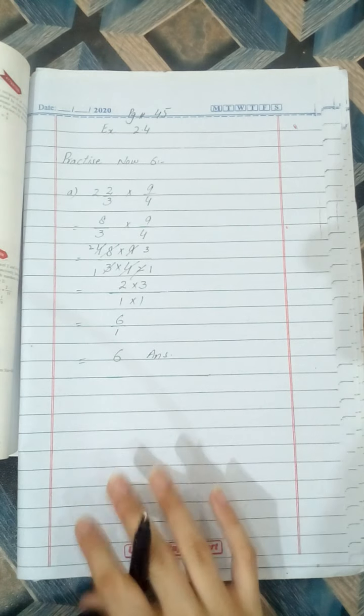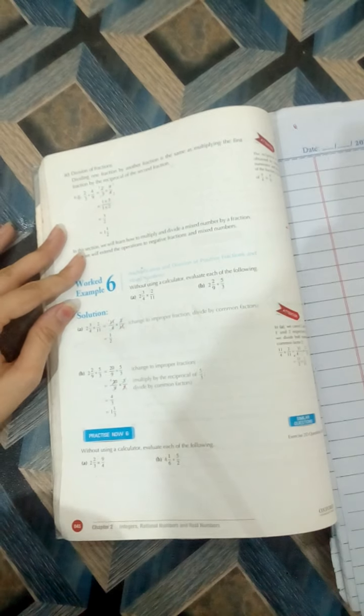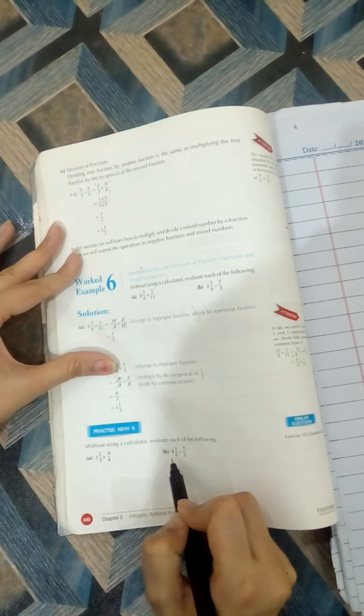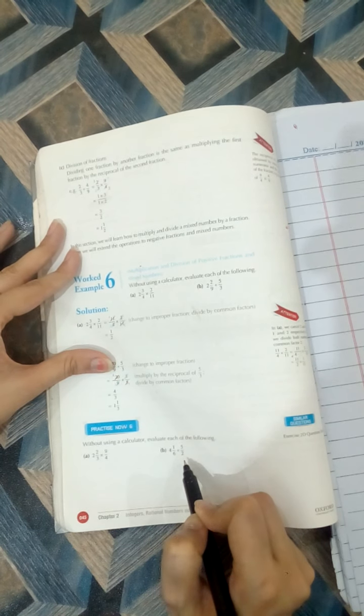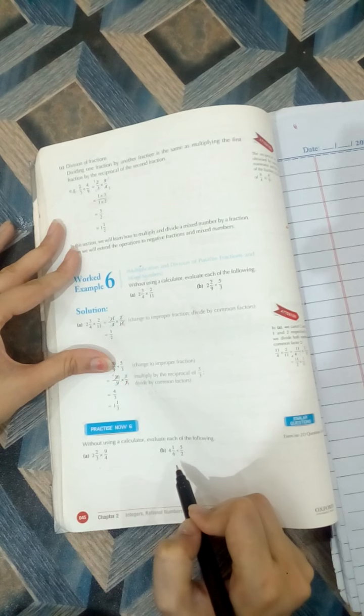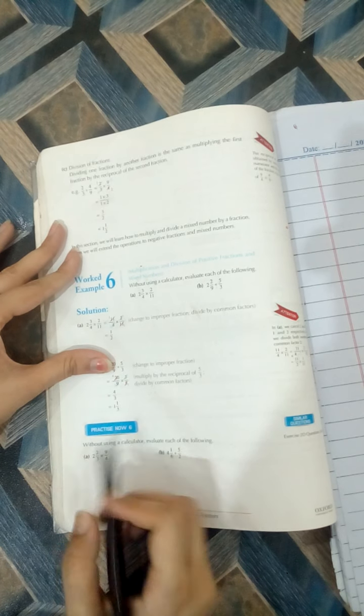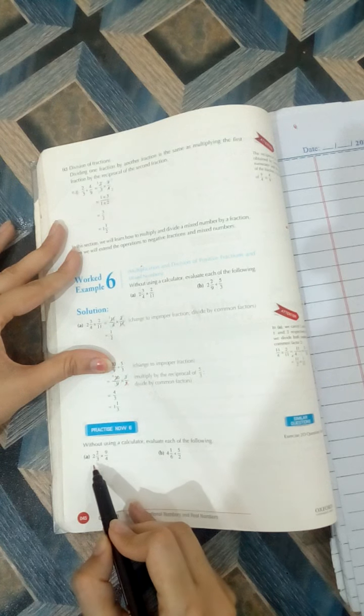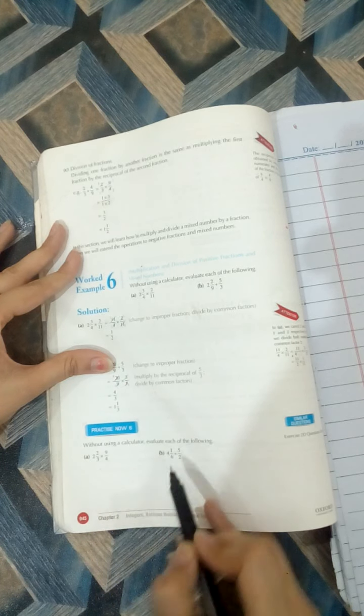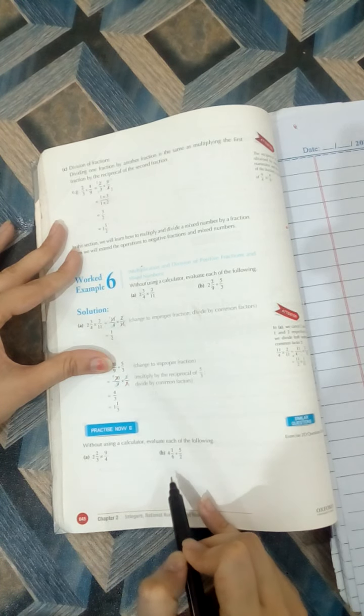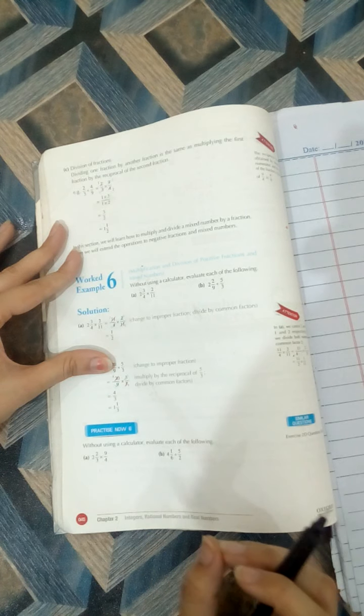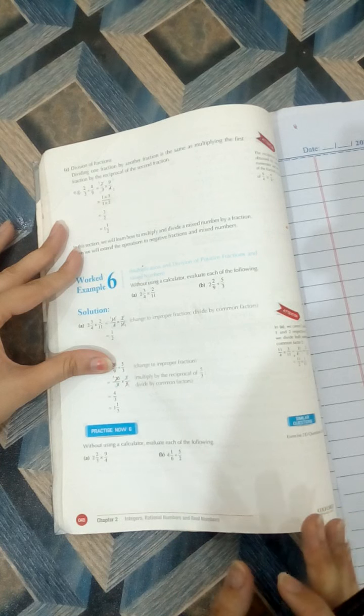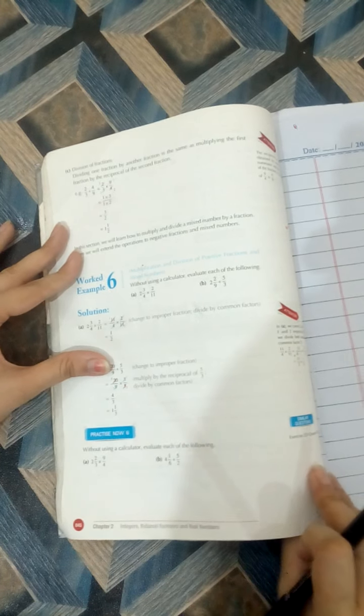Now look at question number B: 4 whole 1 by 6 divided by 5 by 2. Students, this is the division process. In part A we have done the multiply two fractions, but in this question we divide the two fractions. It has different criteria, but you can say that it is easy, not difficult.